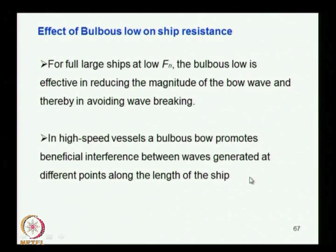One is it reduces the wave breaking resistance by bringing down the size of the bow wave, and the other one is primarily in high speed vessels. If it is properly designed and adopted, the bulb creates a wave system which will destructively interfere with the ship wave system, thus bringing down the resultant wave of the ship and hence the wave making resistance.